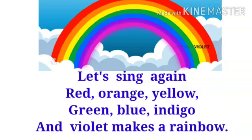There are seven colors in rainbow. Red, orange, yellow, green, blue, indigo and violet.